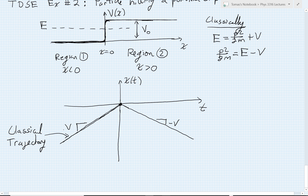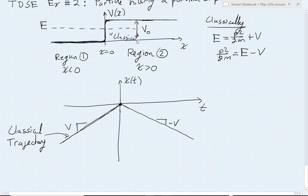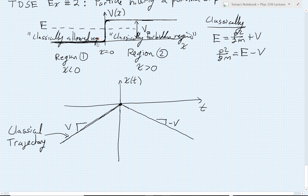This introduces a bit of terminology. Because the particle is classically not allowed on the x greater than 0 side, that is called the classically forbidden region — that's my region 2. And the region over here in contrast is the classically allowed region, where the particle is perfectly happy to be.